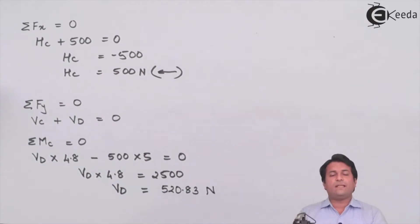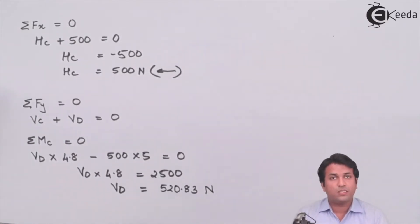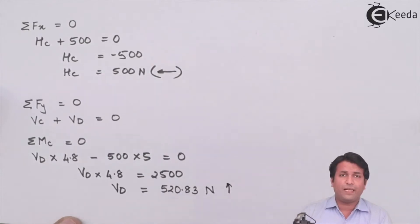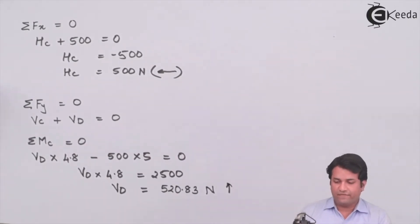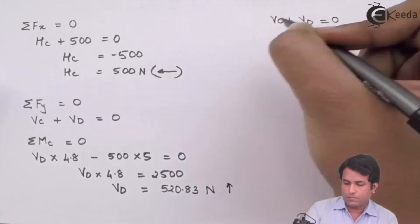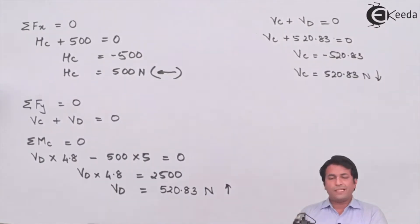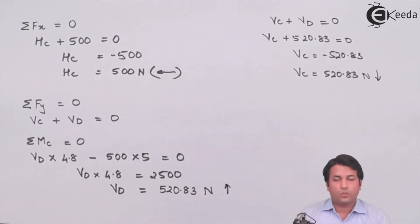I got the vertical reaction at D as 520.83 newtons. Since the answer is positive, my assumption that VD acts upwards is correct. Substituting VD into the equation for ΣFy = 0, I get VC as negative, which means my assumption of VC acting upwards is wrong, so VC actually acts downwards.